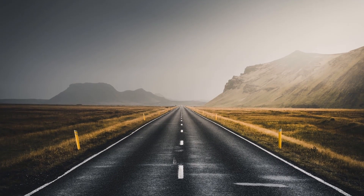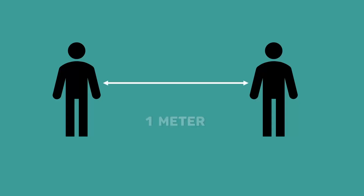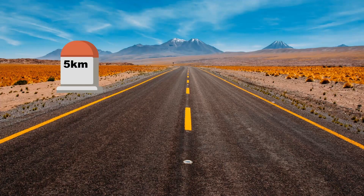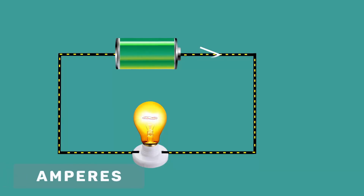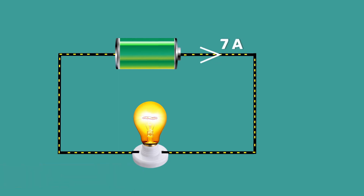We know that distance is measured in meters, like 1 meter, 10 meters, or 5 kilometers. In the same way, current is measured in amperes — like 1 ampere of current or 7 amperes of current.